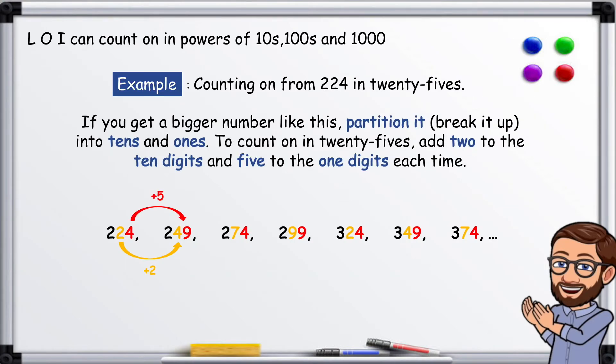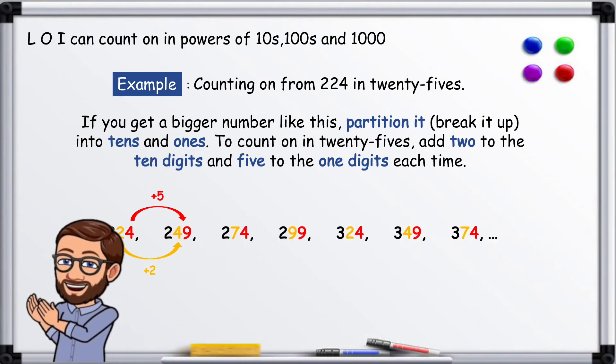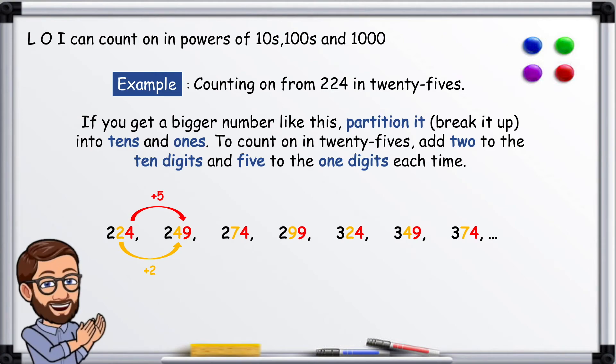Example: counting on from 224 in 25s. If you get a bigger number like this, partition it, break it up into 10s and 1s. To count on in 25s, add 2 to the 10 digits, and 5 to the 1 digits each time.